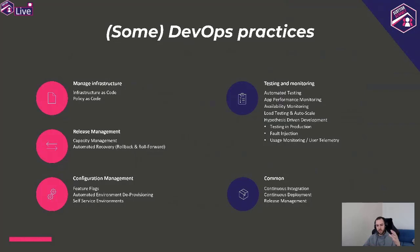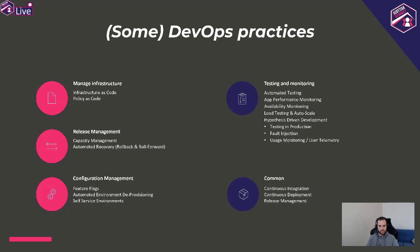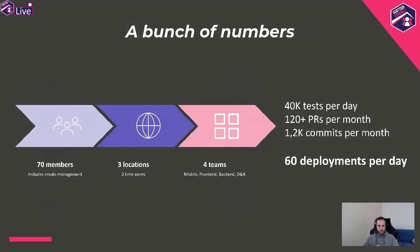We started doing a continuous integration and continuous deployment pipeline, then really doing the entire product management and release management process. We created a pipeline that builds the product the same way Visual Studio does and then publishes the package into the App Service, so we have full traceability of the entire work we're doing. Of course there are many other areas to invest in — configuration management, infrastructure as code, testing, monitoring, fault injection — and I will be touching many of these things in the next slides.